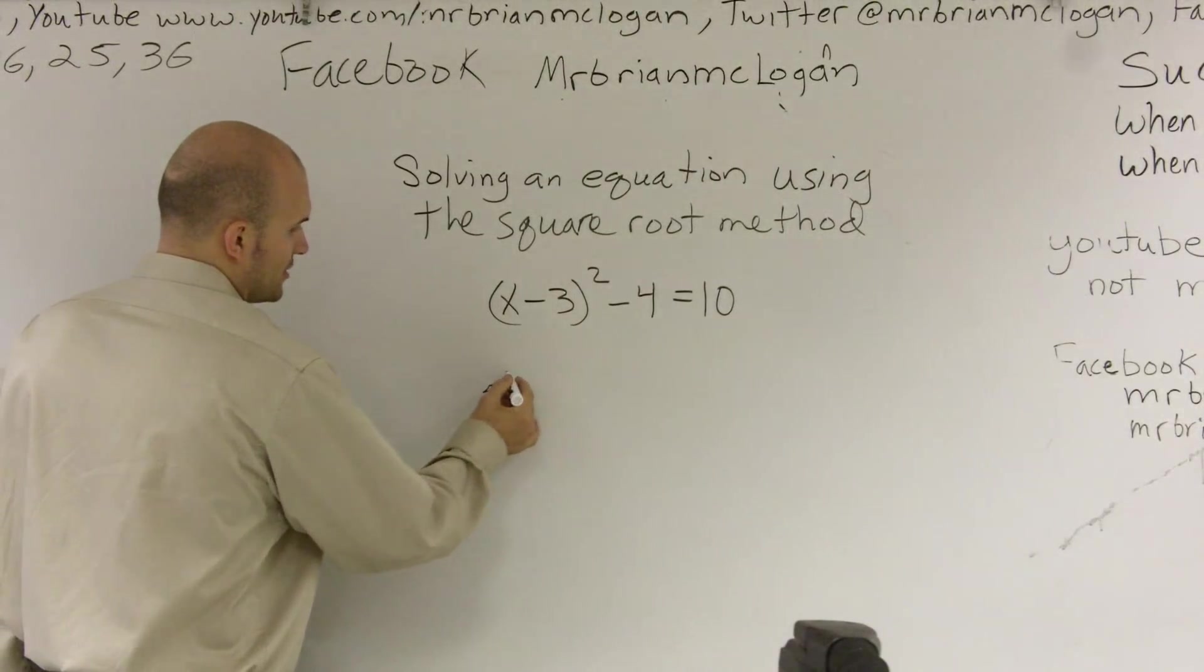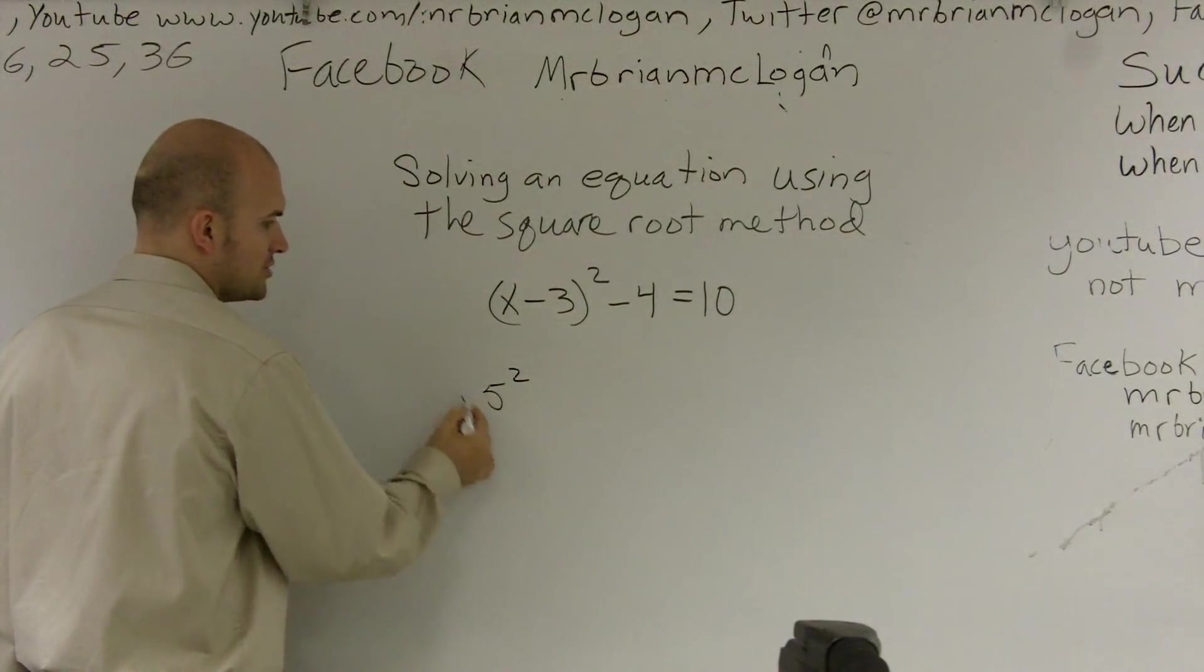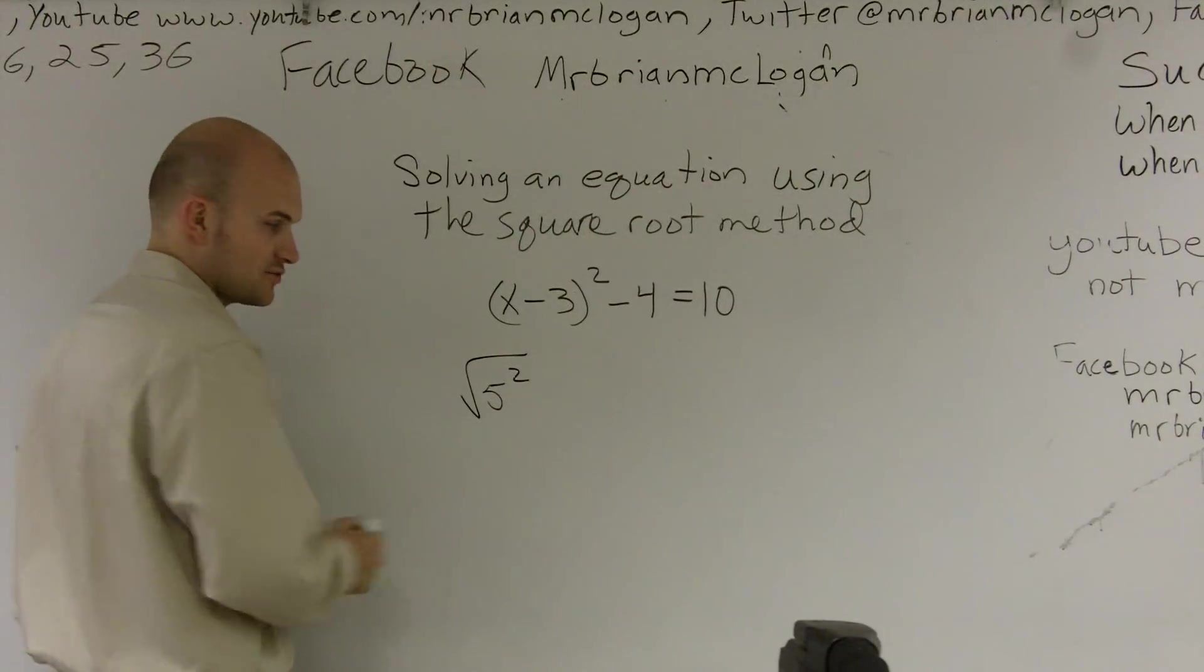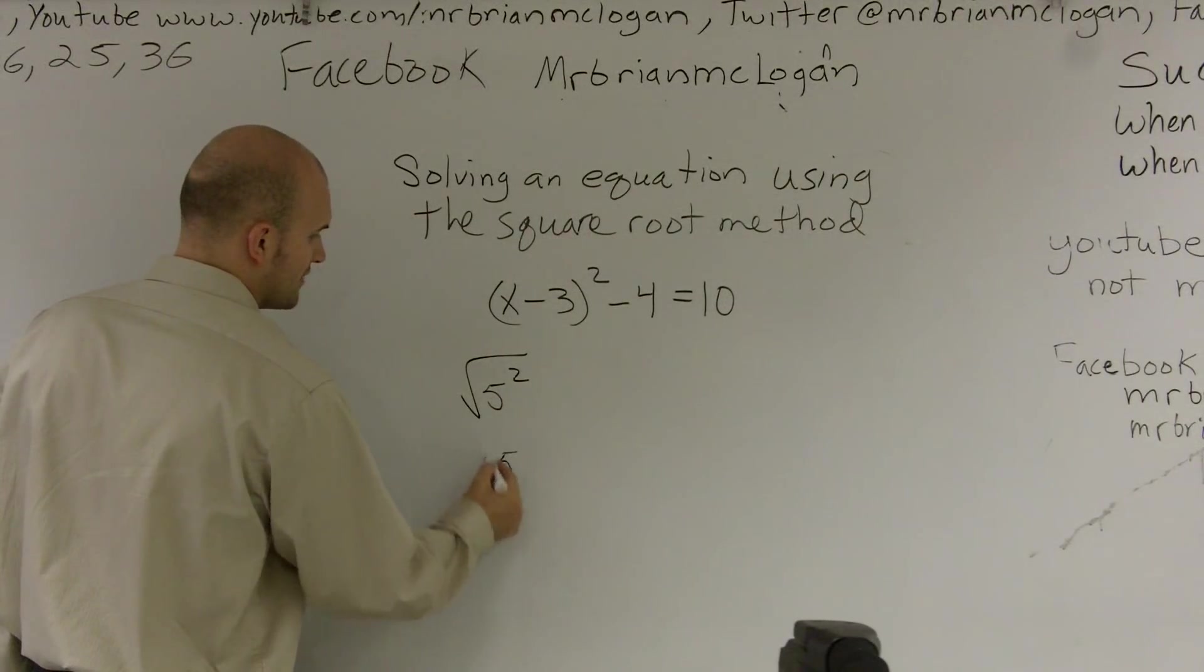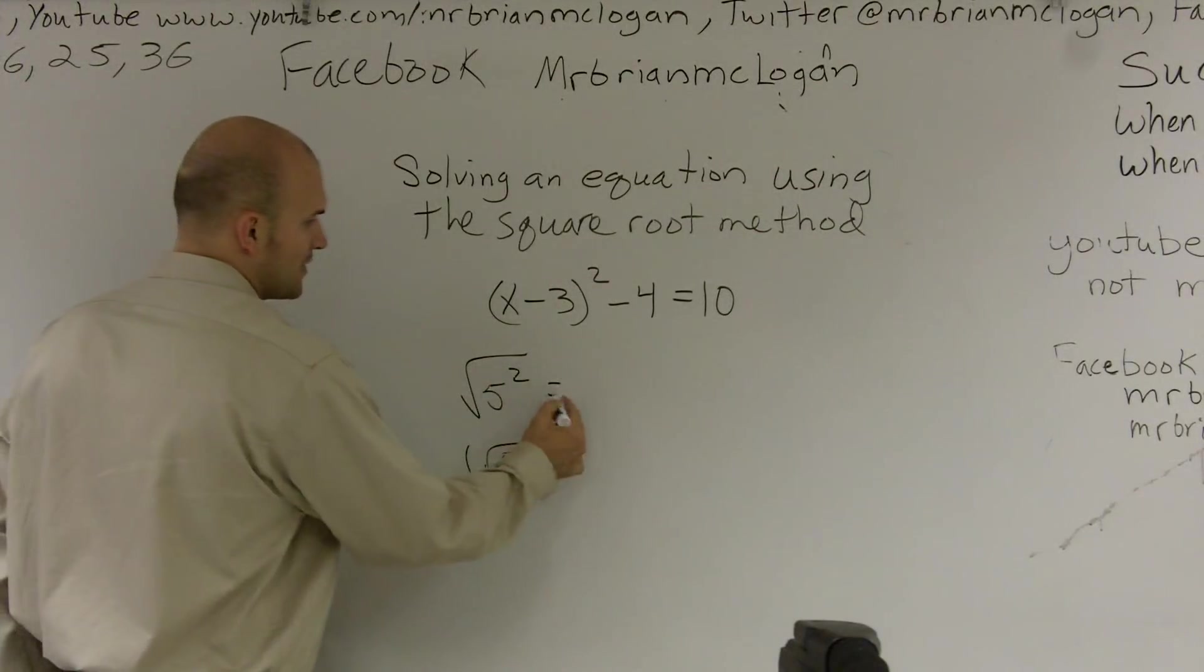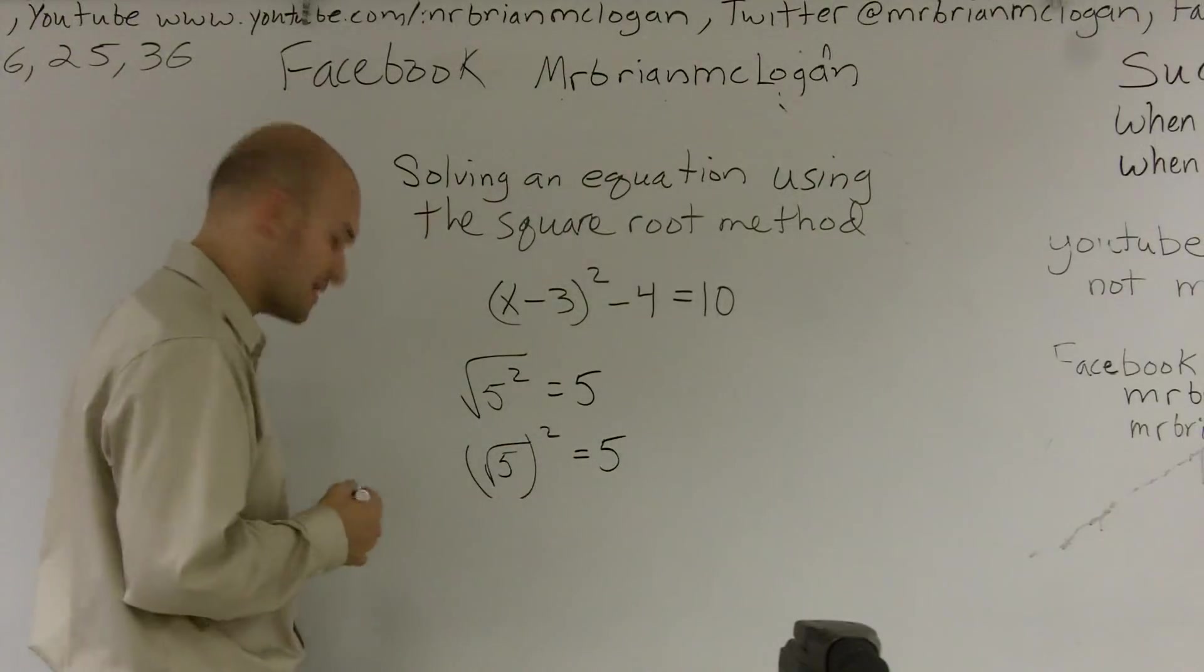Similarly, like if I was saying 5 squared, to undo that I'm going to have to take the square root. Same thing if you have the square root of 5, to undo that you're going to want to square it. So these are inverse operations that are going to both give you back 5.